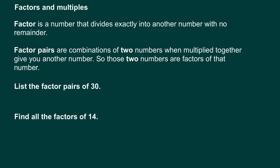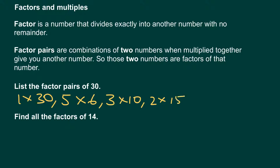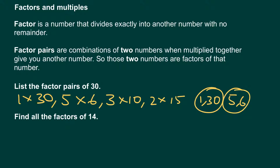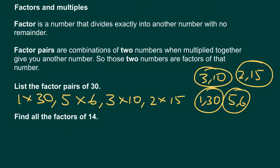We need to think about all the combinations of two numbers that when multiplied together give us the number thirty. Starting from the beginning: there's obviously one times thirty, there is five times six, there is three times ten, and there is two times fifteen. And those are all the factor pairs. So the number thirty has four factor pairs: one and thirty, five and six, three and ten, and two and fifteen.